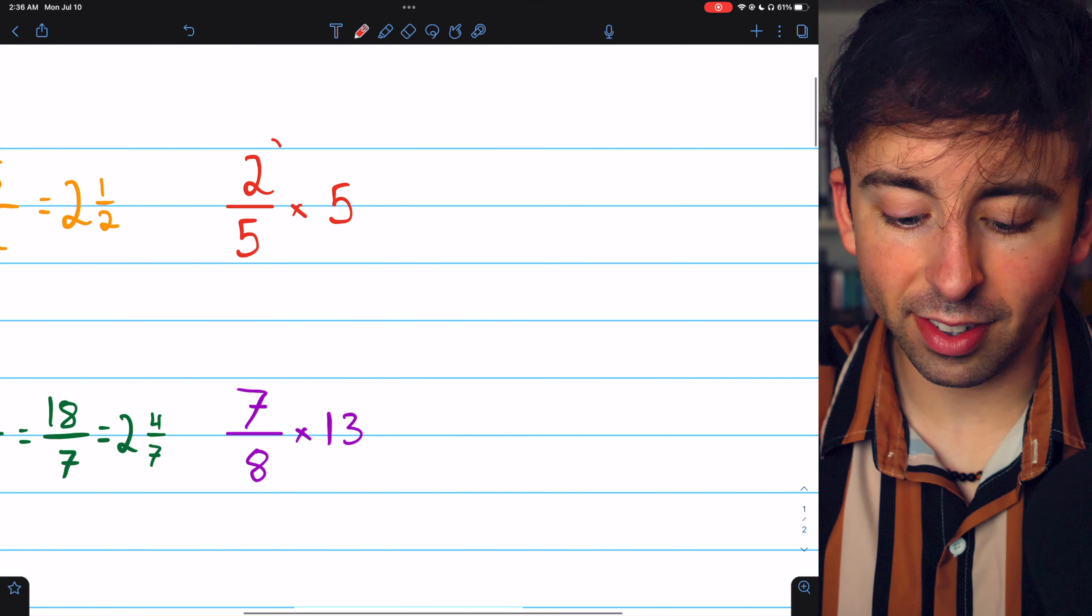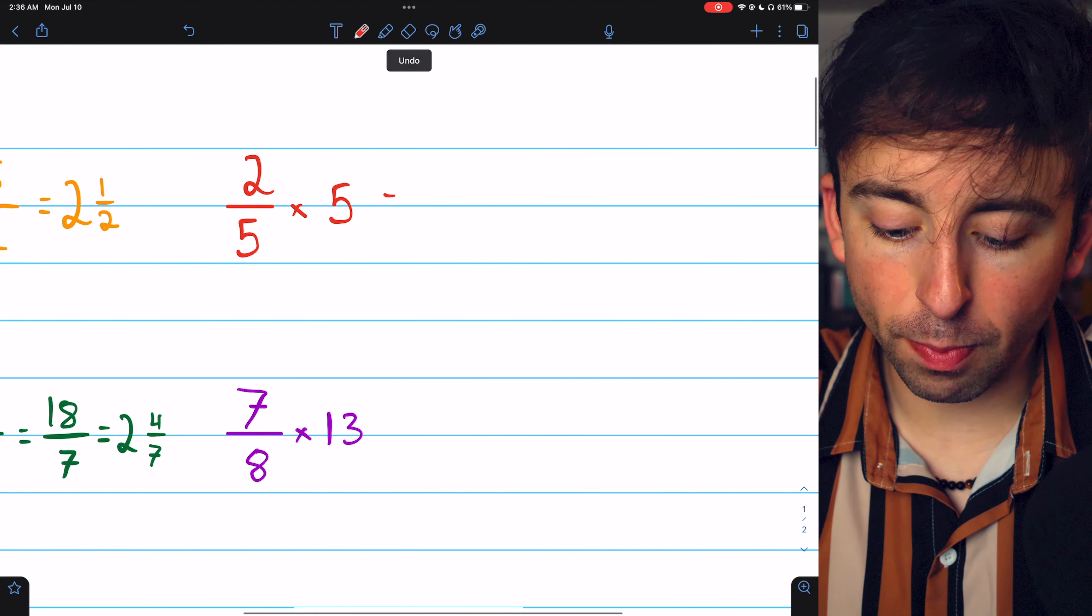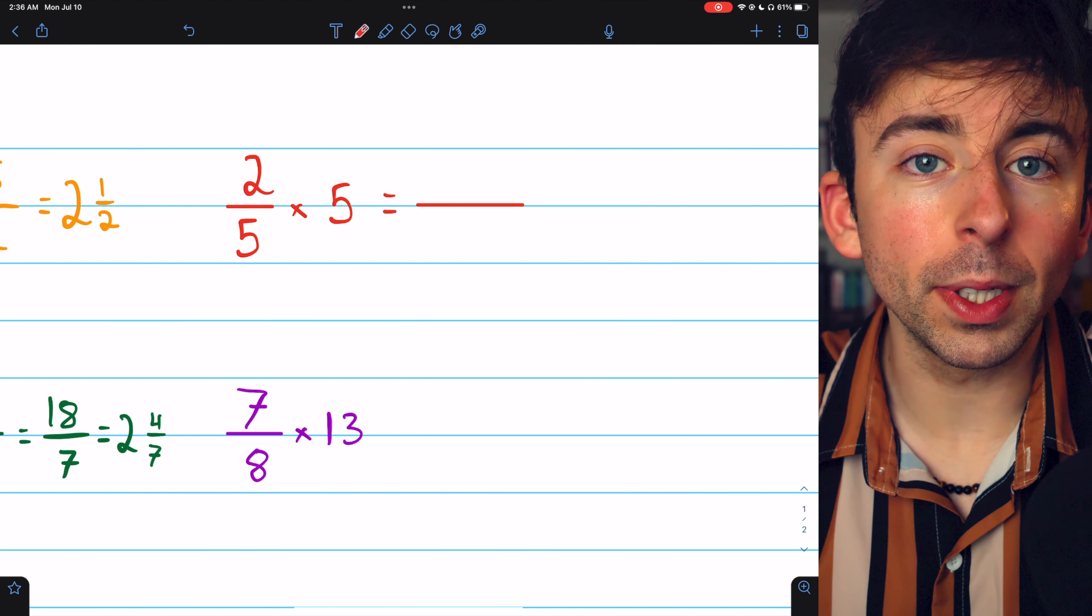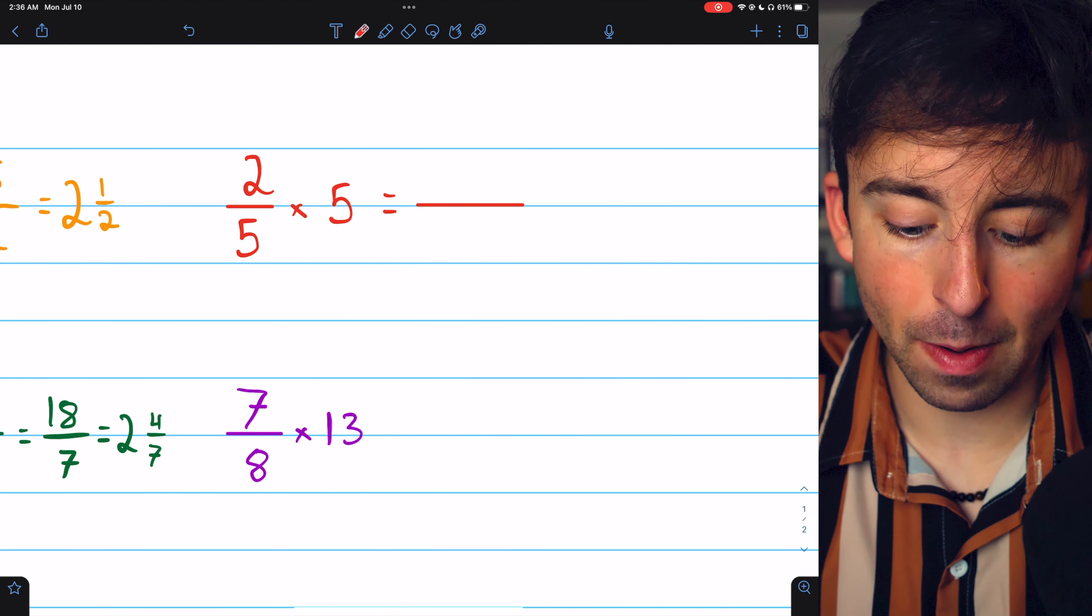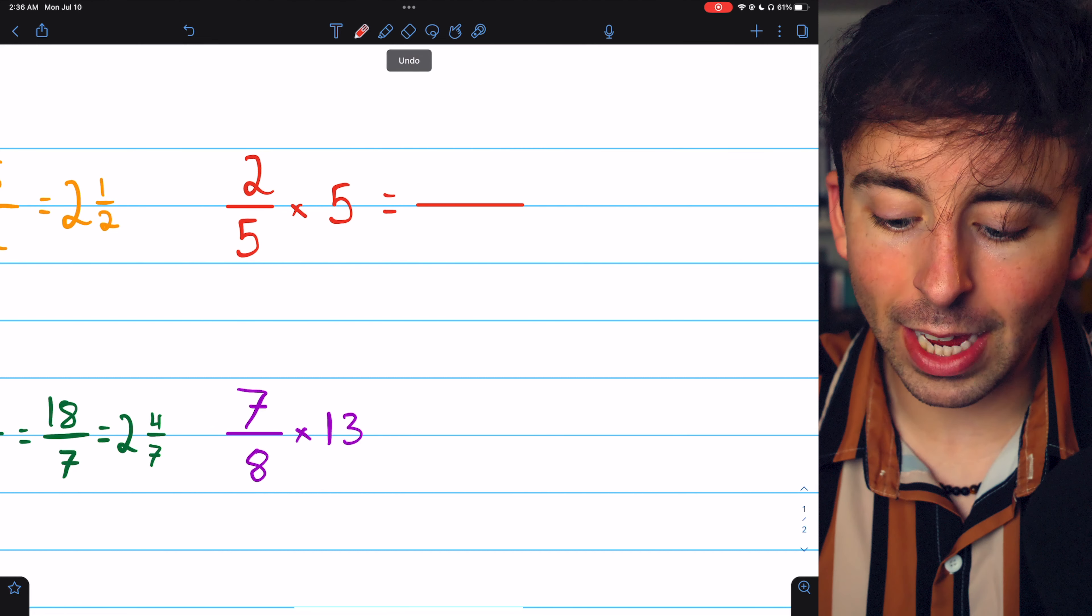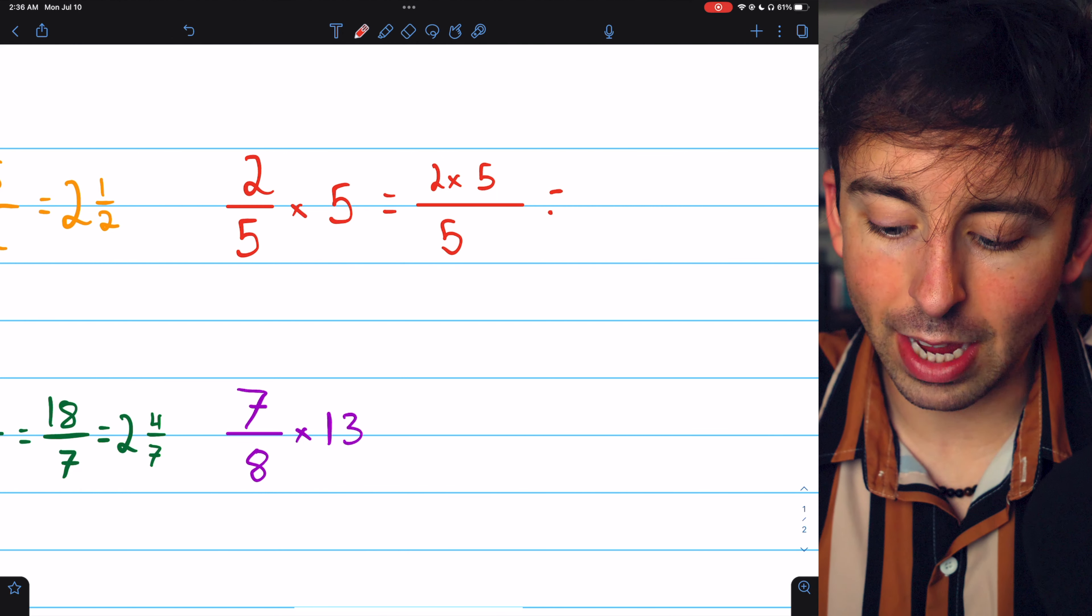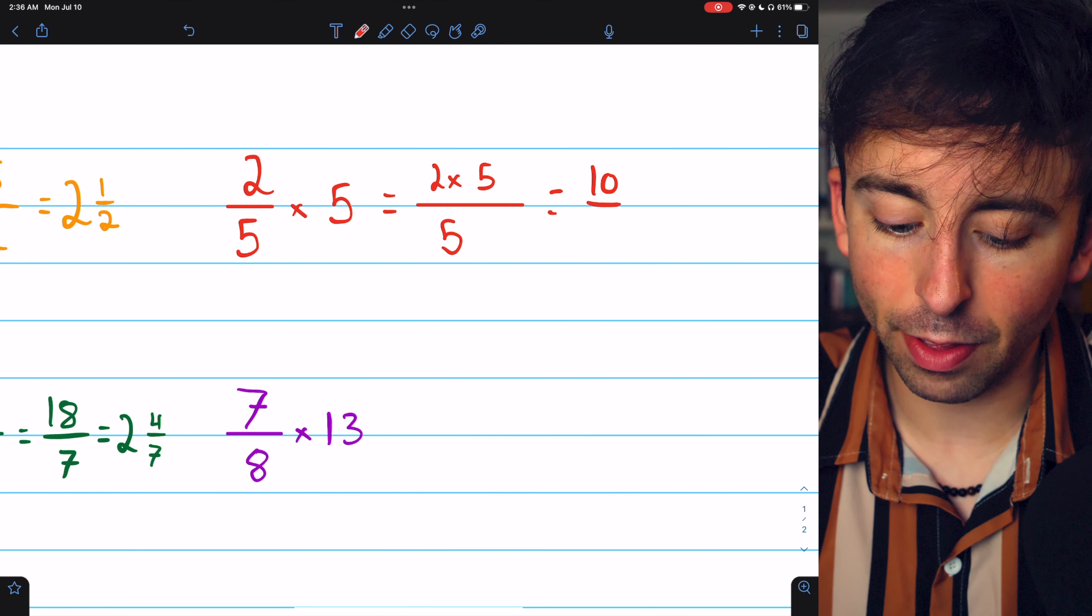Now, what about 2 fifths times 5? Again, just multiply the whole number by the numerator. The order of the multiplication doesn't matter. In this example, the whole number is on the right, but that doesn't change anything. We're still just multiplying the numerator by the whole number, and so the answer is 10 fifths.